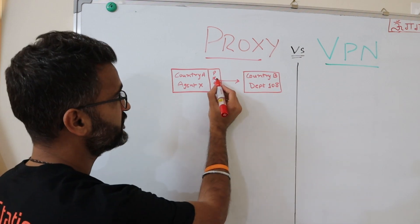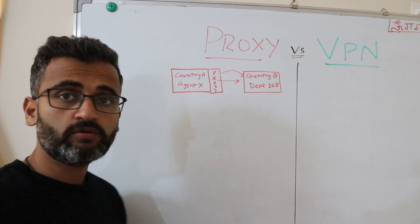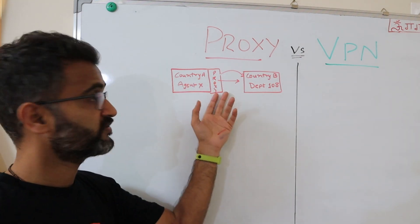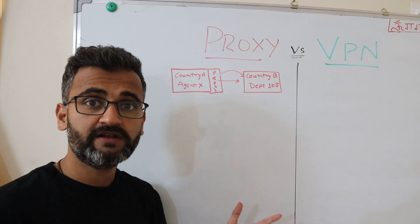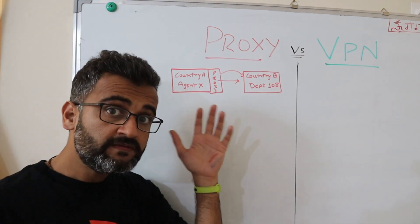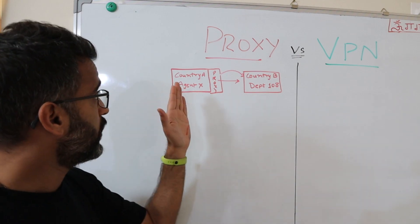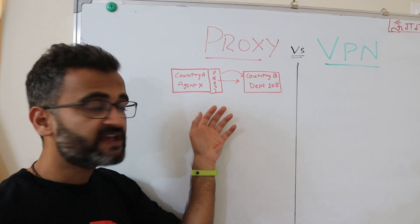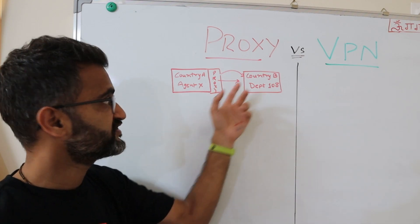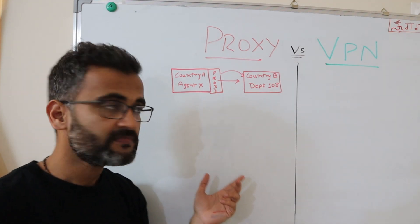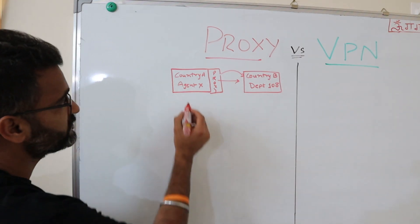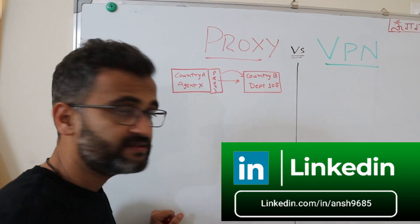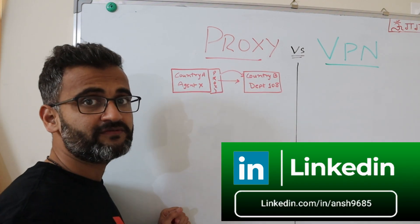So what Agent X does is create a proxy within his own country — and that proxy is nothing but a national of Country B. This proxy uses his credentials to log in to that particular department, where he was previously a member, and tries to get that information. Although all the information is requested by the secret service agent, it appears as if it's being requested by a national of Country B. So the agent's identity is hidden — but importantly, the message itself is open.